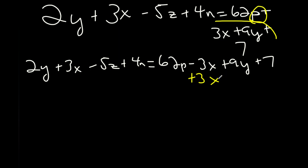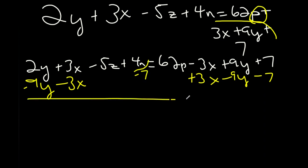So, we're going to want to add 3x, subtract 9y, and then subtract 7. Let's try to see if we can match this up on other constants on other sides. So, subtract 3x, subtract 9y, and subtract 7. And then when we simplify this out, we're going to get negative 7y. These x's are going to cancel. Minus 5z plus 4n minus 7. And then we're left with 62p.